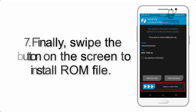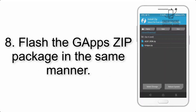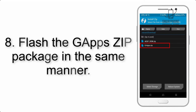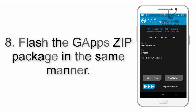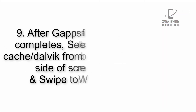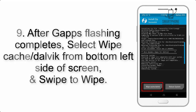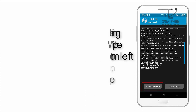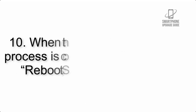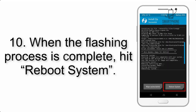Step 7: Swipe the button on the screen to install the ROM file. Step 8: Flash the GApps zip package in the same manner. Step 9: After GApps flashing completes, select Wipe Cache and Dalvik from the bottom left side of the screen and swipe to wipe.